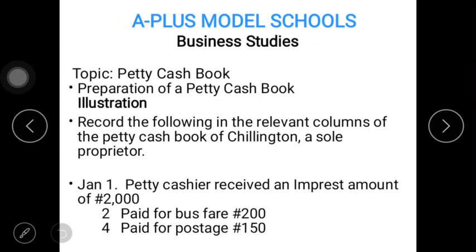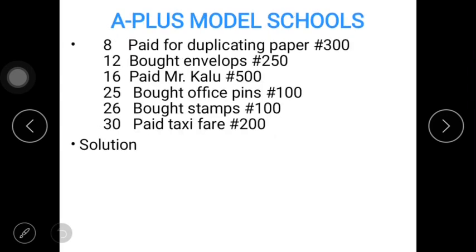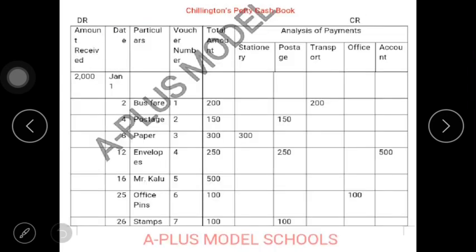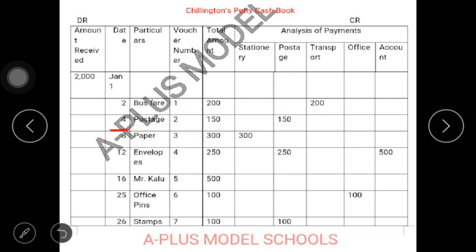January 4: paid for postage, 150. You have January 4 here and the particular is postage. That is your second voucher for the month of January. Your postage will be recorded under the postage column, which is 150. Since there is no other transaction that took place that day, you have your total of 150 under your total amount column.